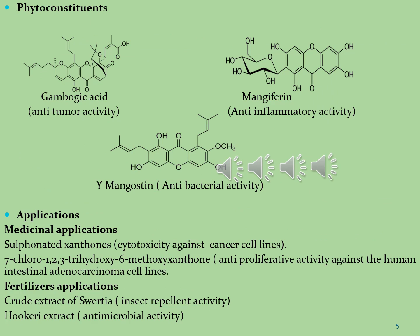You can see here three phytoconstituents. The first molecule is gambogic acid, which is rich with anti-tumor activity. The second molecule is mangiferin, which is rich with anti-inflammatory activity. The third molecule is mangostin, which is rich with antibacterial activity. Now we see the sources and pharmacological applications of these molecules.